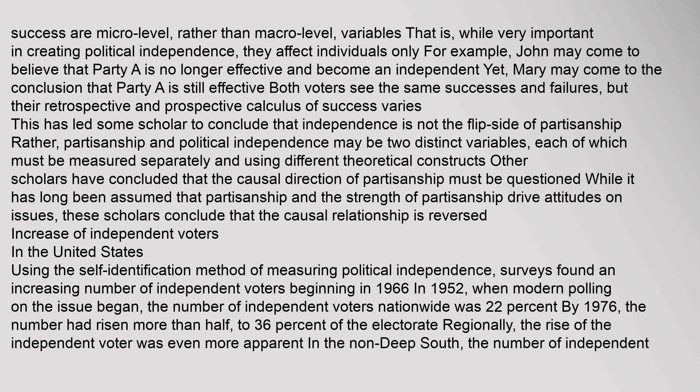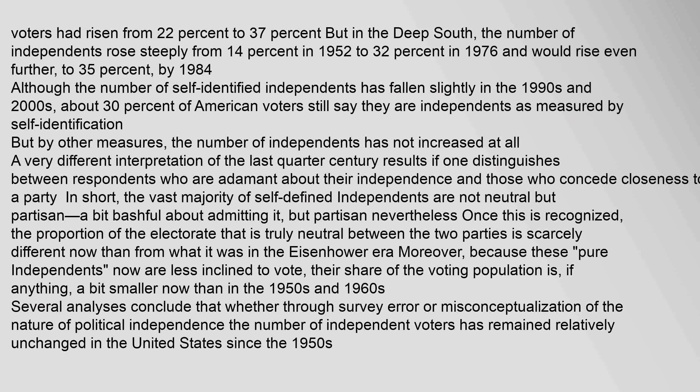Using the self-identification method of measuring political independence, surveys found an increasing number of independent voters beginning in 1966. In 1952, when modern polling on the issue began, the number of independent voters nationwide was 22%. By 1976, the number had risen more than half, to 36% of the electorate. Regionally, the rise was even more apparent: in the non-deep South, independent voters rose from 22% to 37%, but in the Deep South, the number rose steeply from 14% in 1952 to 32% in 1976, and would rise even further to 35% by 1984.